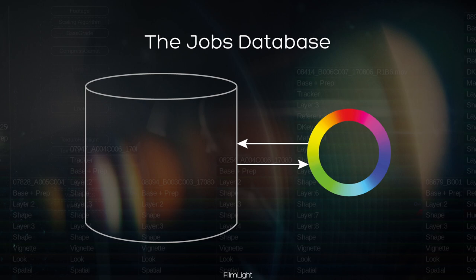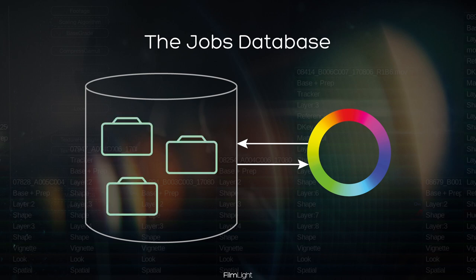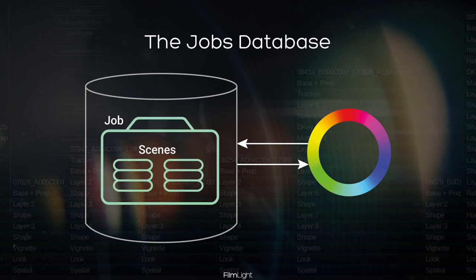We divide up our work into separate projects which we call jobs, and that's the highest level within the database. A job would typically encompass the whole project — for example, a feature film, or if you're working on a TV series, the entire series would be contained in a single job. Within each job we split the work into as many scenes as necessary. A scene in Baselight is simply a collection of the shots you want to work on together.